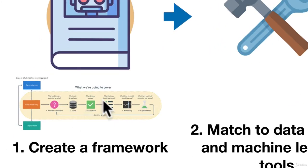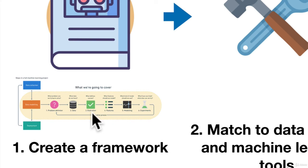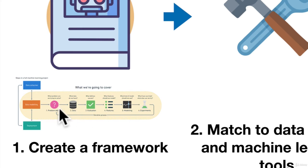Look how beautiful that is. We've got step one, problem definition; step two, data; step three, evaluation; step four, features; step five, modeling; step six, experimentation. All of this is an iterative process.